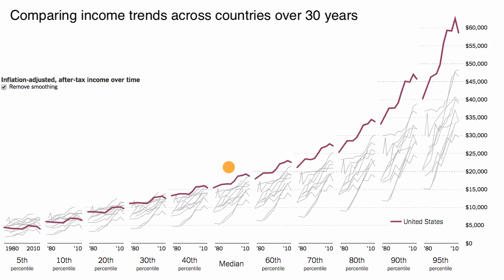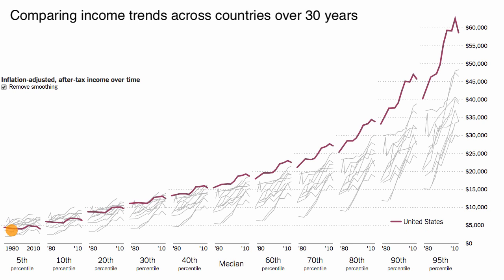The picture does change a little bit depending on which countries you look at and which extreme you examine. For the fifth percentile, there are countries like Germany where if you're at that fifth percentile, you were better off in 1980 and in 2010 relative to the United States, with a similar rate of improvement. Then you have countries like Ireland, where at the beginning of the period you would have been worse off at the fifth percentile, but at the end of the period it looks like you were slightly better off.